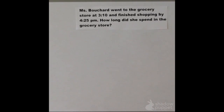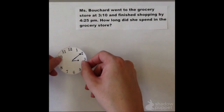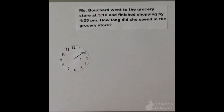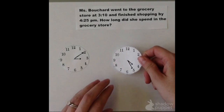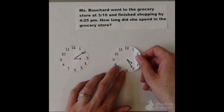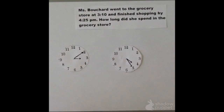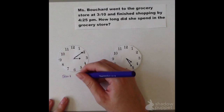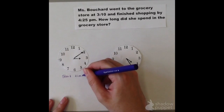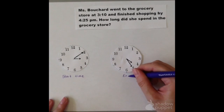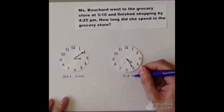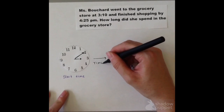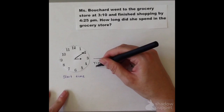In this problem, we know that Ms. Bouchard started shopping at 3:10, and we also know that she finished shopping at 4:25 p.m. We need to figure out how long she spent in the grocery store. I can make note of the starting and ending times on an analog clock to better capture the idea of how much time might have passed between my starting and ending points. The time passed between the starting and ending point will be the total elapsed time.